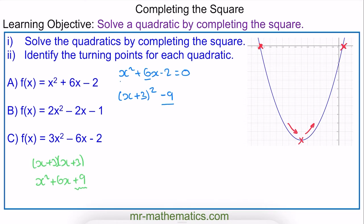So now we have x squared plus 6x, and we need to take away the 2. We can write this out as x plus 3 all squared minus 11 is equal to 0.